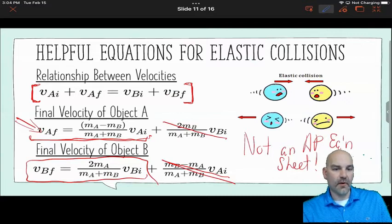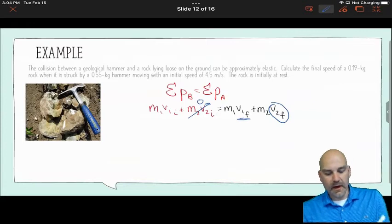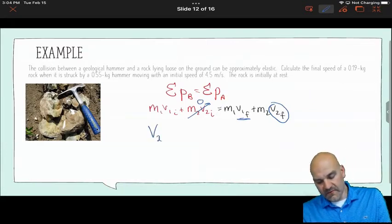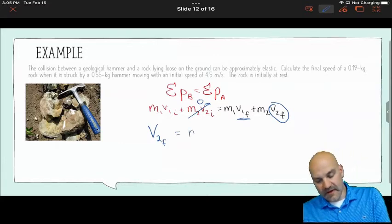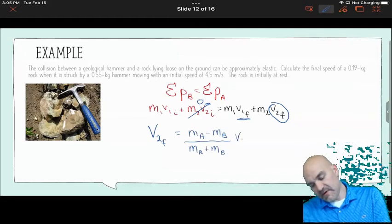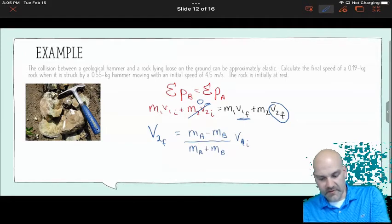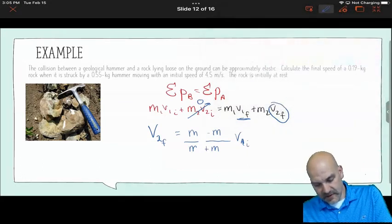So this is why these equations on this slide are important. So this is why you really, really, really want to memorize these in some way. So I know that V2 final is going to equal, it's MA minus MB over MA plus MB times V1 initial. Oh, sorry, I've been using 1's, not B's, sorry. So M1, M2, right? Over M1 plus M2.